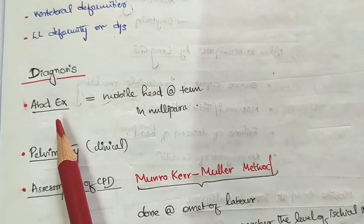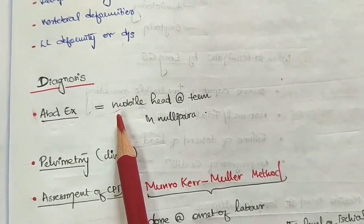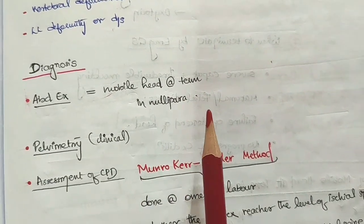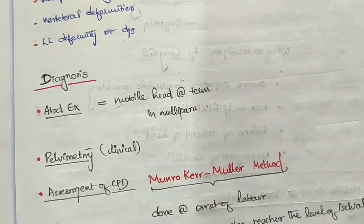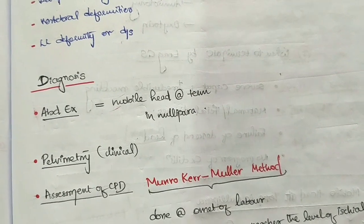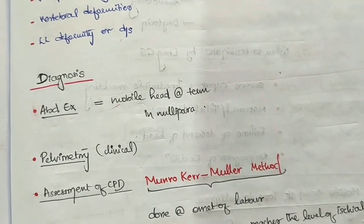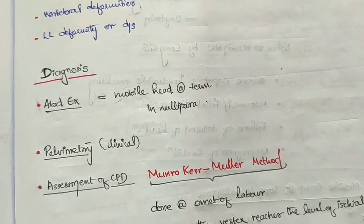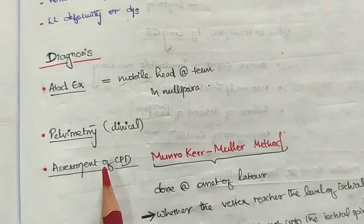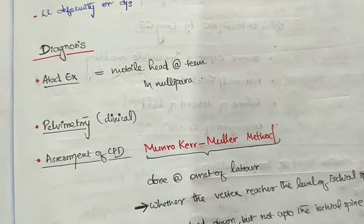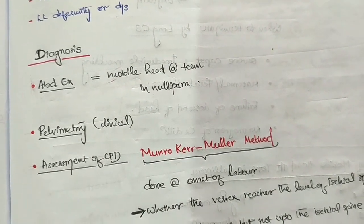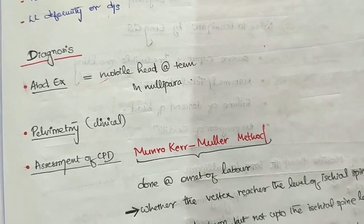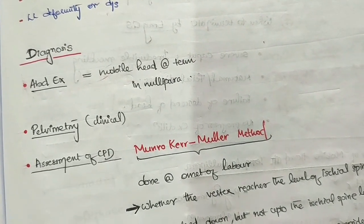First and foremost, abdominal examination — we will find a mobile head at term. If the head is not engaged in a nullipara, we have to be suspicious about contracted pelvis and CPD. Diagnosis is confirmed by pelvimetry, clinically assessing the pelvic sizes to determine whether there is a contracted pelvis.